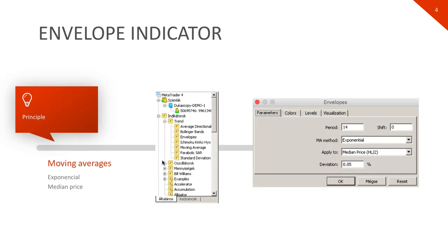Our strategy is based on the envelope indicator. Envelope means, in our case, a rather broad interpretation, because this indicator actually looks like a channel. The indicator is included in MetaTrader under Trends by default — it is actually a moving average shifted up and down. Instead of using standard parameters, set the moving average method to Exponential and use the applied price set to Median Price. The Exponential method results in a more sensitive curve tracking the price better, and Median Price calculates the average length of the candlesticks.